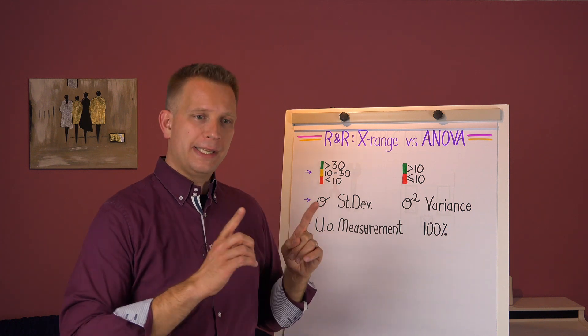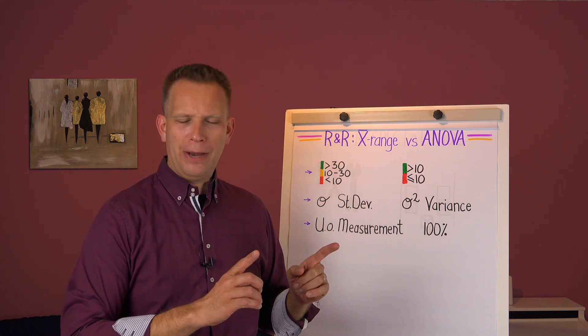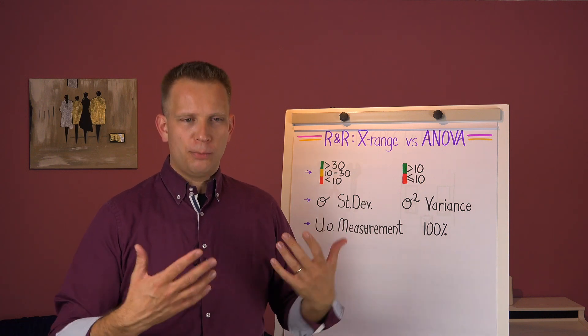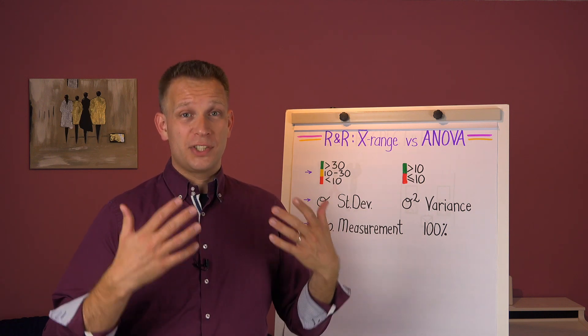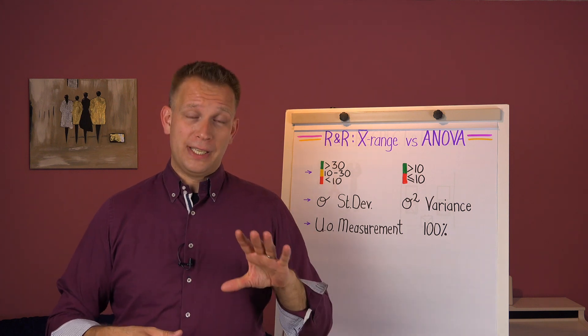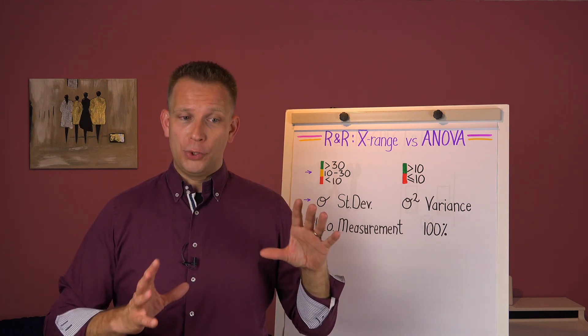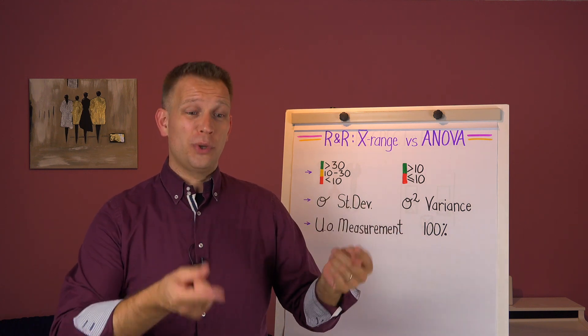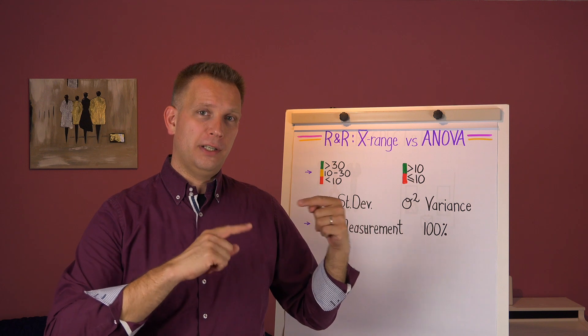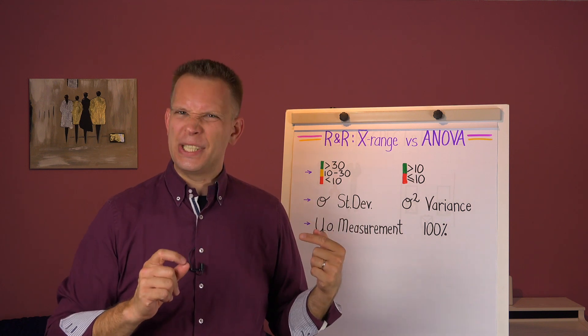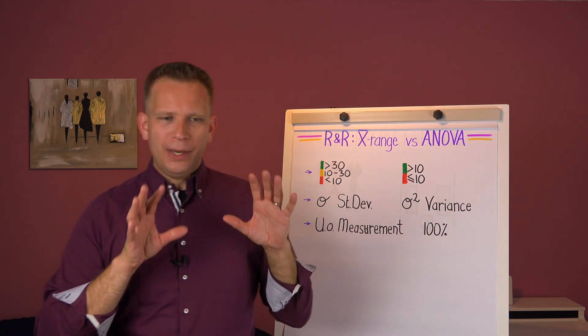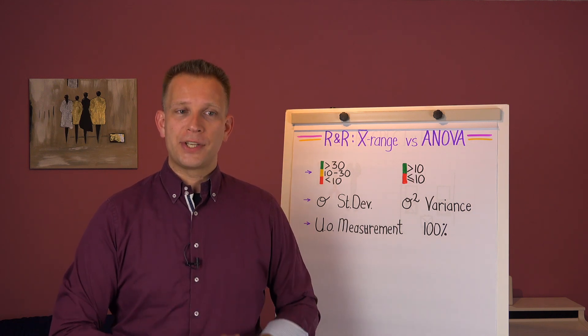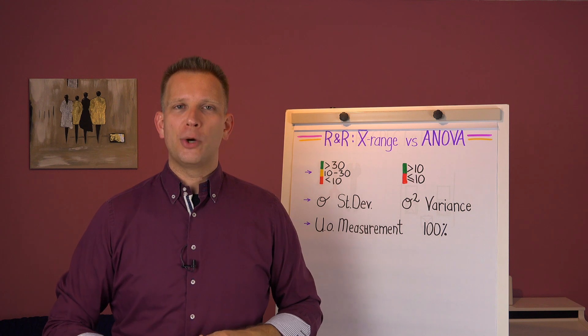Then the ANOVA method also came out, and it's been out for years now, but it's getting more and more popular, especially since we've got statistics packages that can do it for us. Because honestly, the ANOVA method, even if you use Excel's statistical package to calculate the ANOVA, that's not all. You still need to do a couple of steps to get R&R from that. So it's not the easiest way to use. But when that one came out, it also came with a recommendation, and that is the R&R has to be lower than 10.